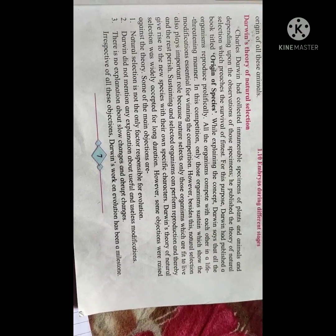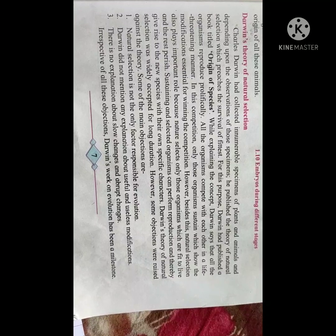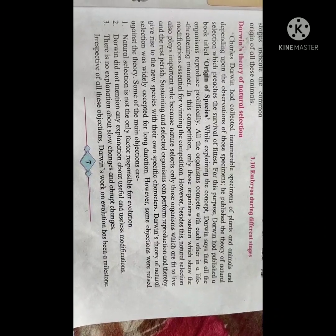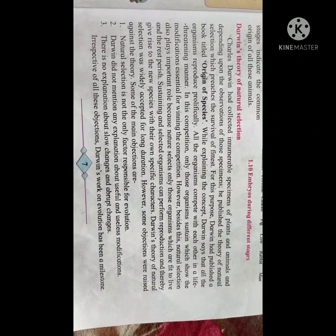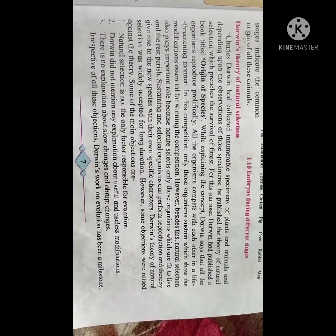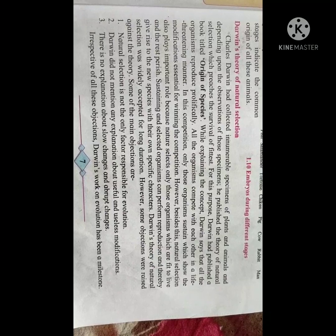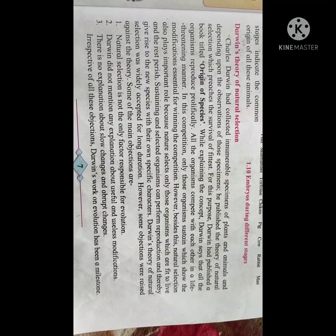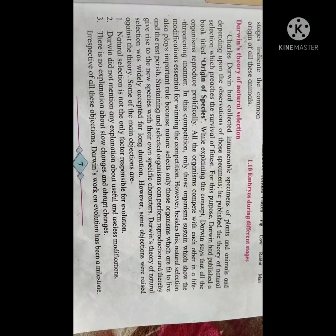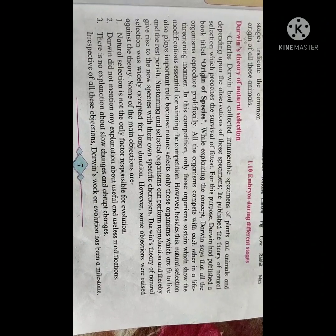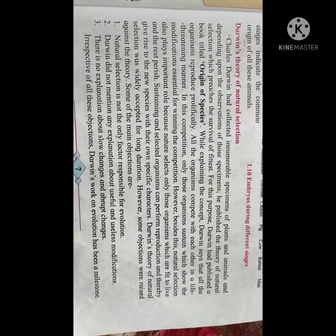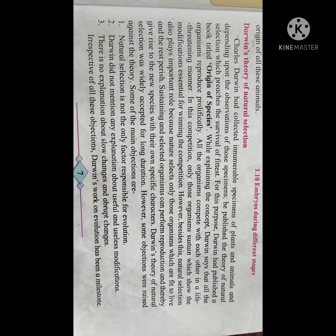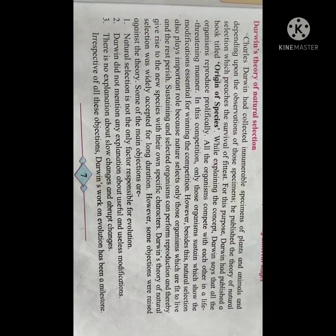Our next point is Darwin's theory of natural selection. Darwin was an English biologist who proposed the theory of evolution. He showed that all organisms and all species have been gradually evolved over thousands of years from their common ancestor. He also proposed the principle of natural selection, which is responsible for this evolution, and collected innumerable specimens of plants and animals.